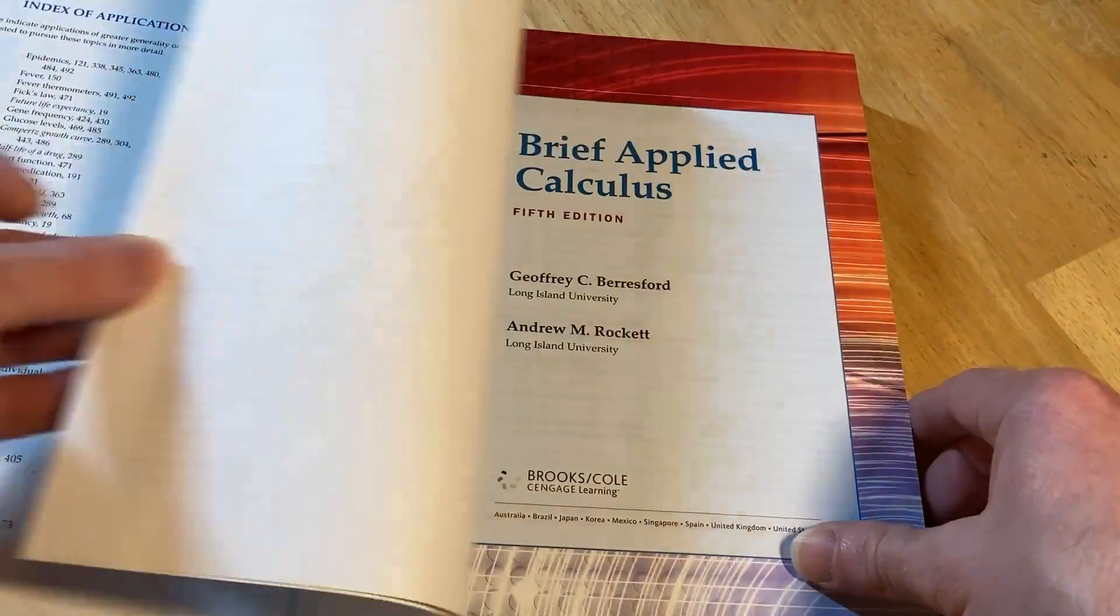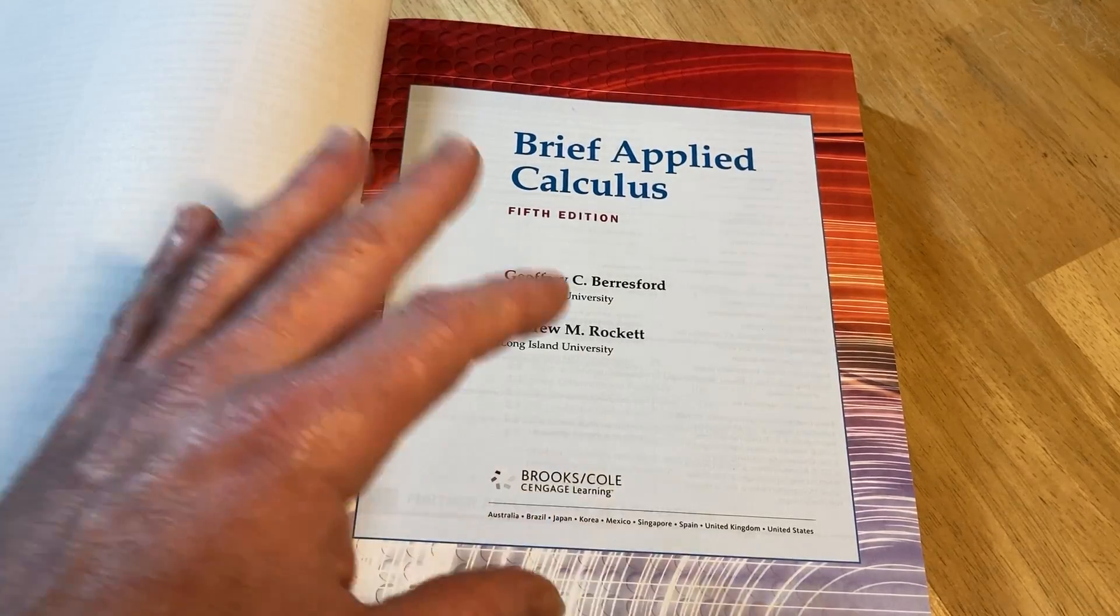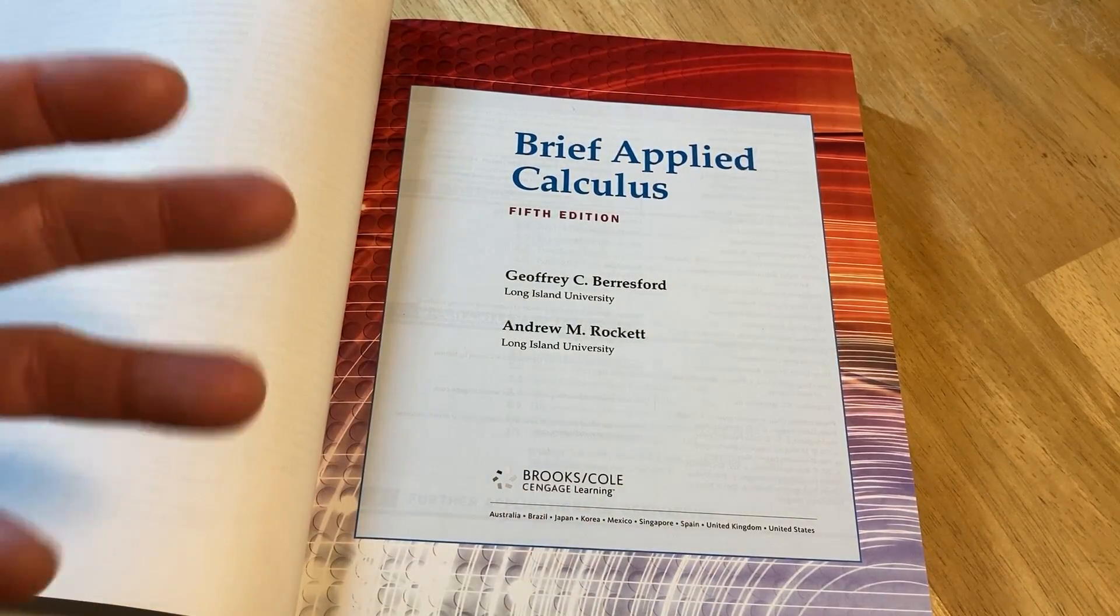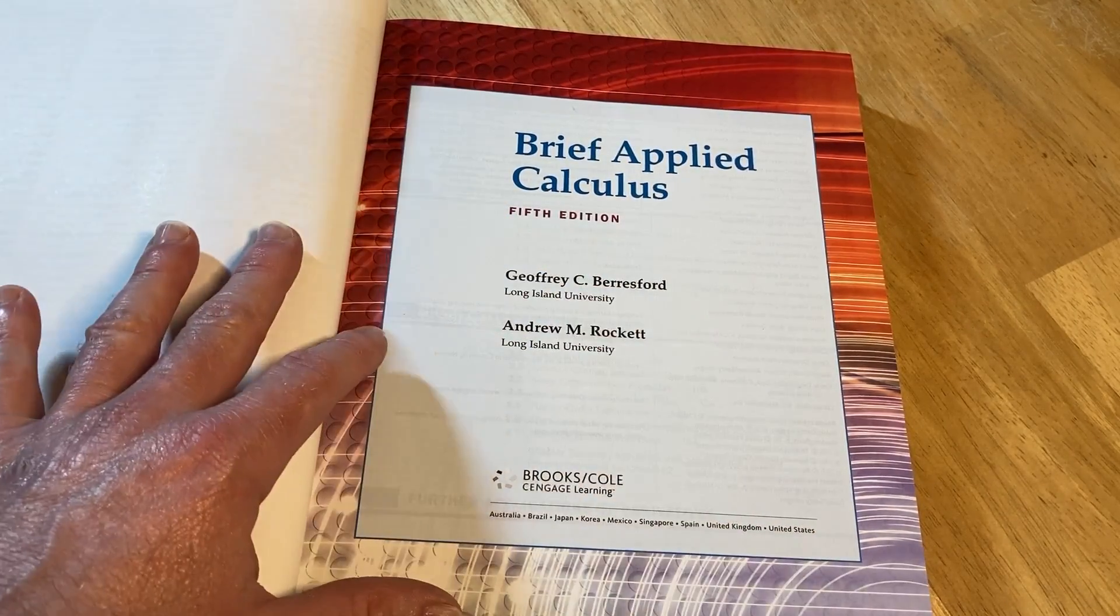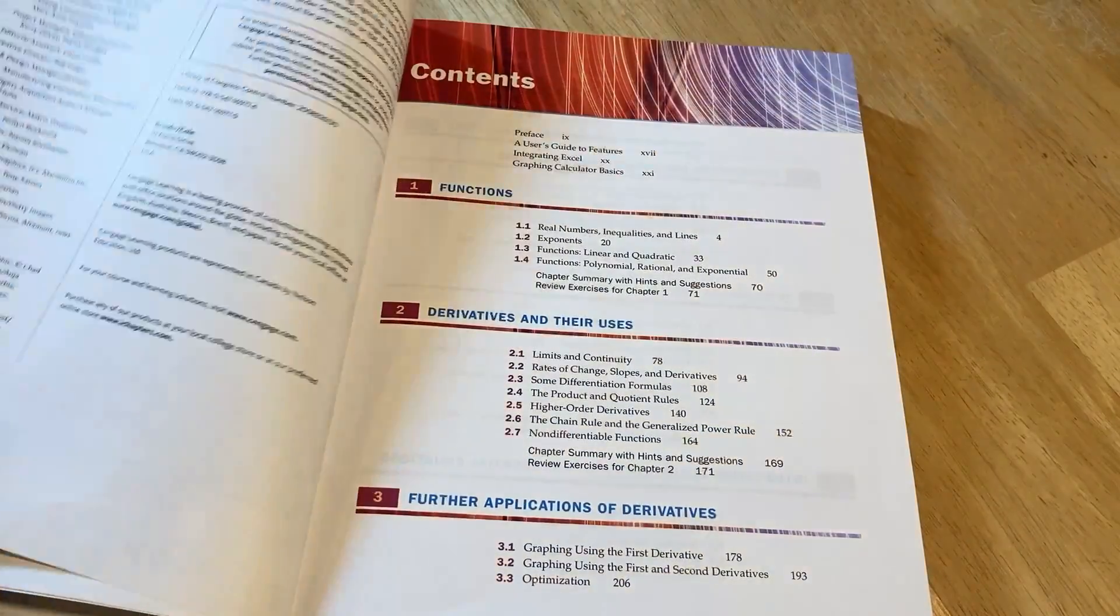And the reason this book is so good and so easy to use to learn calculus is because it's written for people who just know basic algebra. Again there's zero trig in this book. Zero. So you can learn calculus without knowing any trig.